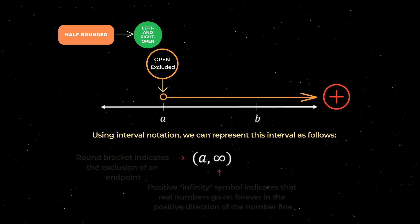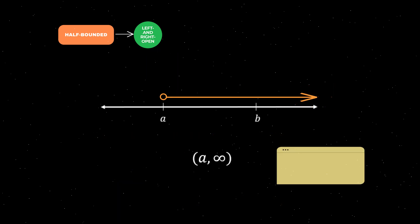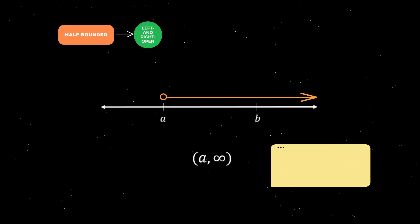Using interval notation, we can represent this half bounded left and right open interval as follows. Note that we include a symbol representing infinity. Infinity is not an actual number — it just means that the real numbers included in this interval go on forever in the positive direction of the number line. As a review exercise, pause this video and try to represent this interval in set builder notation, then press play and I will go through the solution.